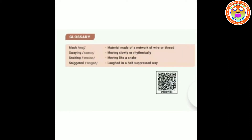Before getting to the lesson, let us learn some words and their meanings - Glossary. Mesh: material made of a network of wire or thread. Swaying: moving slowly or rhythmically. Snaking: moving like a snake. Sniggered: laughing in a half-suppressed way.